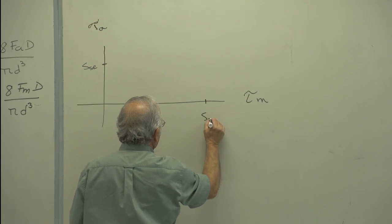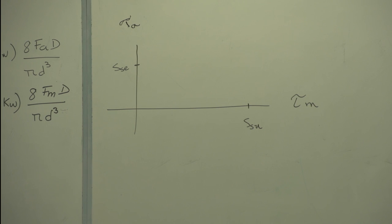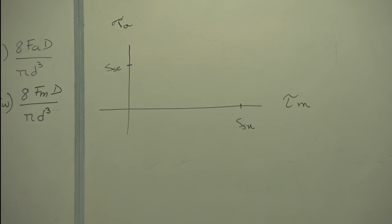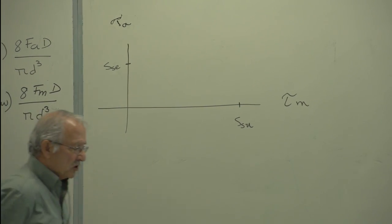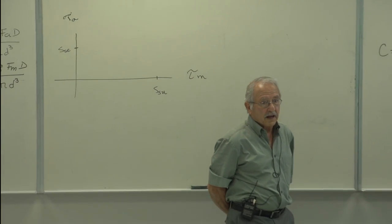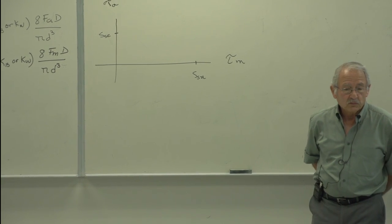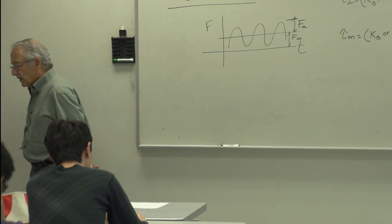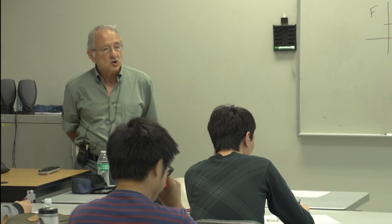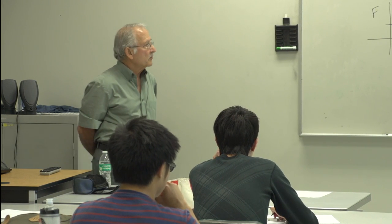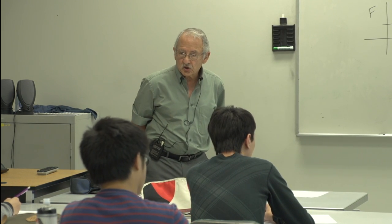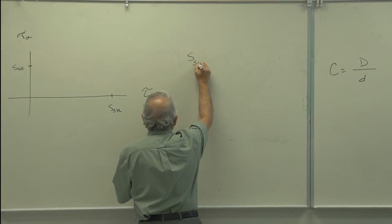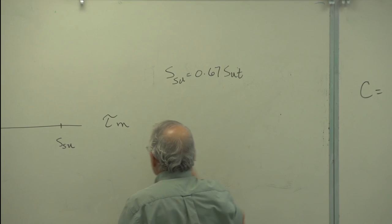For the strength part of fatigue, we need S_SE, the endurance limit in shear, and S_SU, the ultimate strength in shear. S_SU is generally taken as 67% of S_UT. For S_SE, you can either use the general fatigue equations or use equations from the Zimmerli data on page 528 — equations 10-28 and 10-29.